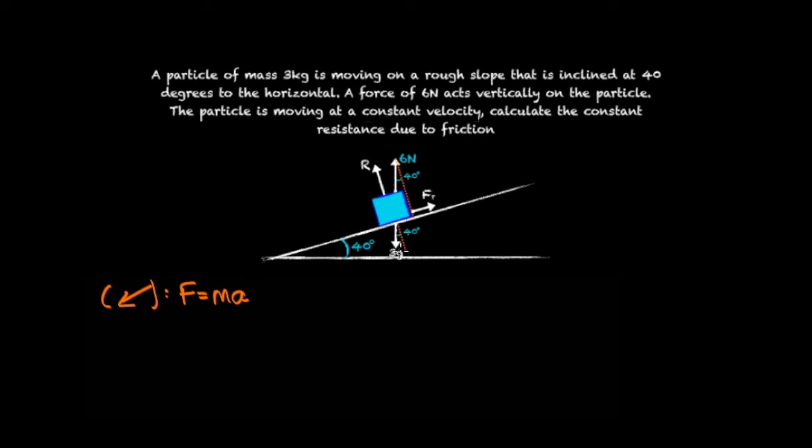So going down the slope we have a force of 3g sin 40 and opposing it we have a force of 6 sin 40.